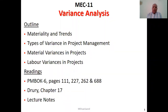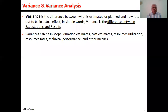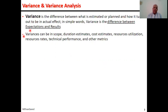Bismillah ar-Rahman ar-Rahim. Variance analysis is an exercise done to find out to what extent and why the project which is in execution stage has deviated from the original estimates or plans. The deviation could be for the better or for the worse. In other words, variance analysis is finding the difference between expectations and results. The scope of variance analysis extends to all the fields of project management — cost, finance, scope, resources, etc. But the focus of this discourse will be on cost.